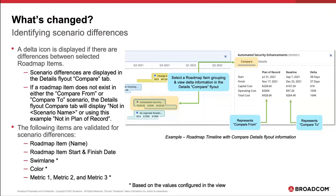As a reminder, the following items are used to validate scenario differences: the roadmap item name change, any changes in start and finish, swim lane changes, color changes, and then metrics.